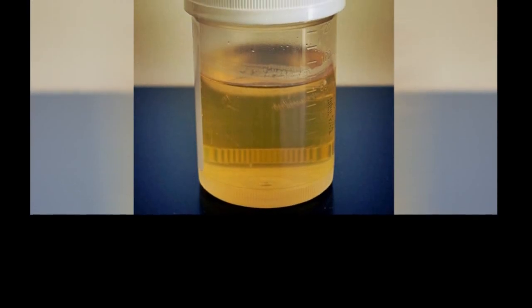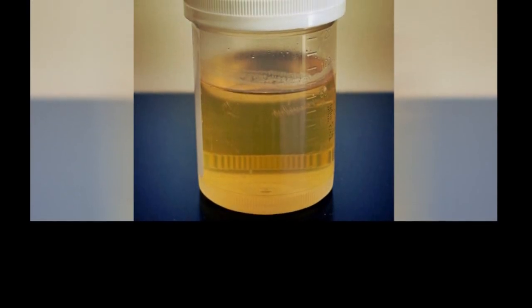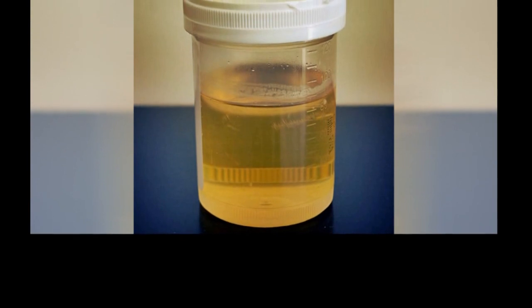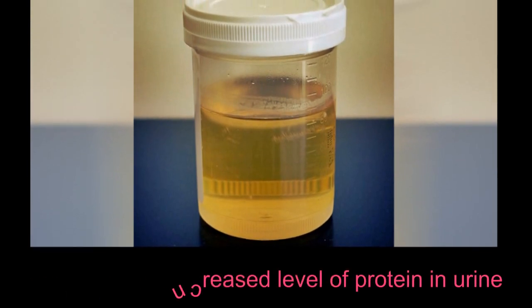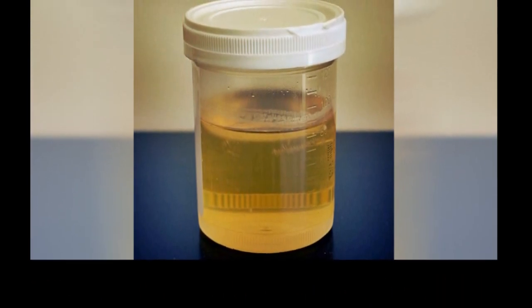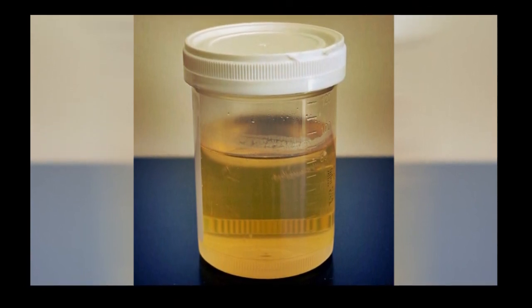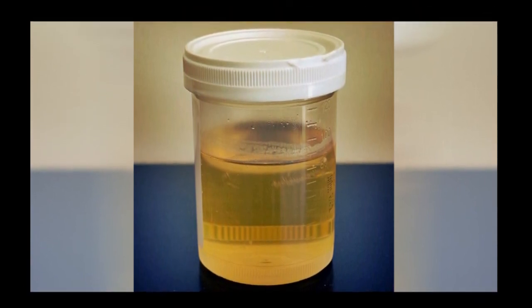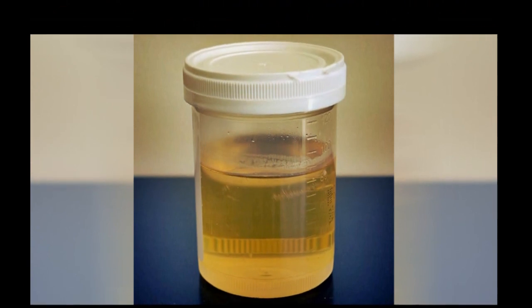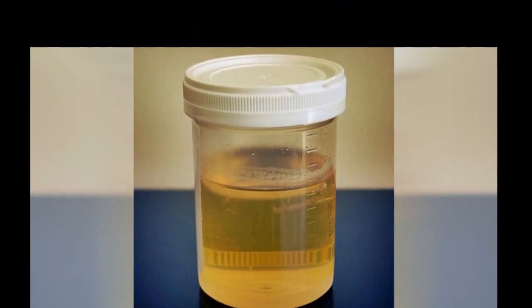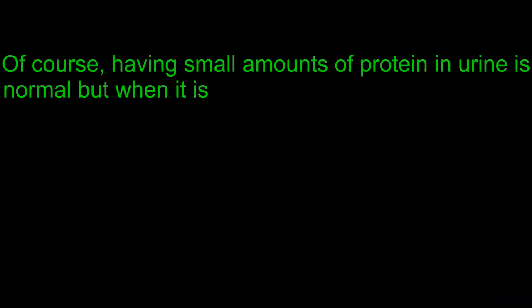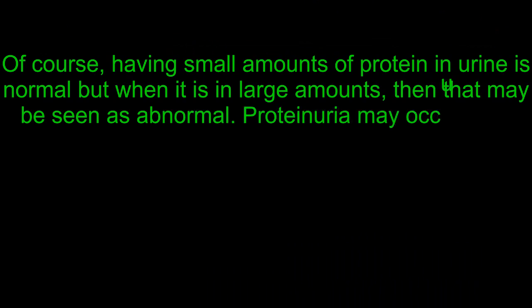Among the common reasons why an individual may have frothy urine is a condition known as proteinuria, or increased level of protein in urine. Proteinuria may be regarded as a cardinal sign of various renal or kidney-related diseases. Frothing occurs because albumin tends to have a soap-like effect, which reduces the surface tension of urine. Having small amounts of protein in urine is normal, but when it is in large amounts, that may be seen as abnormal.